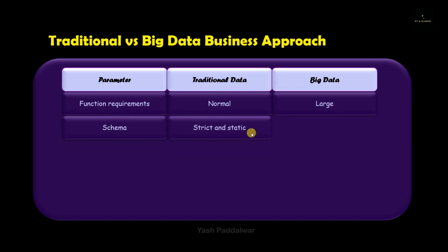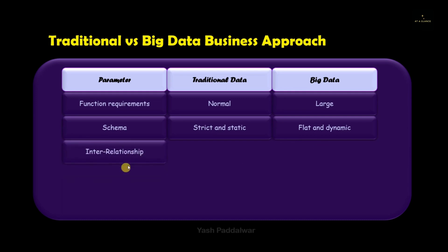The next parameter is schema. For the traditional business approach, it follows a strict and static schema because the data is mostly in structured format. In the big data approach, the schema is flat and dynamic because the data can be in any format — structured, unstructured, or semi-structured — so the schema changes accordingly.